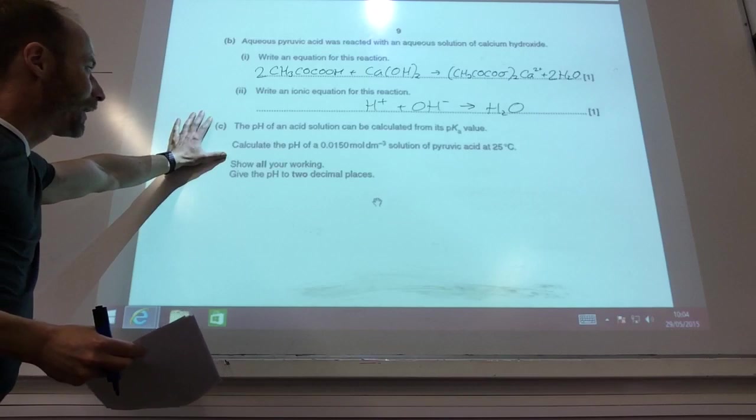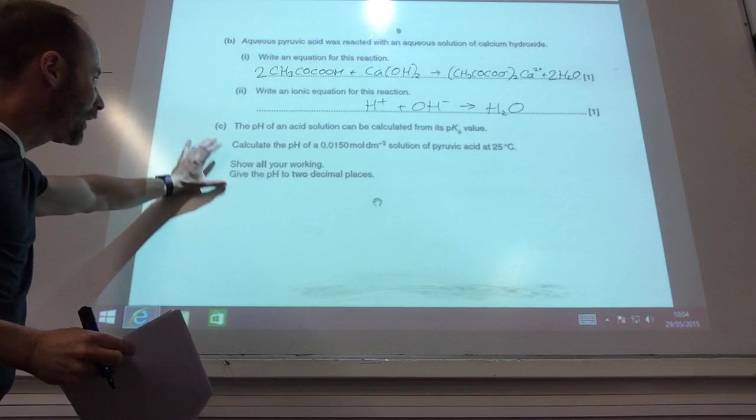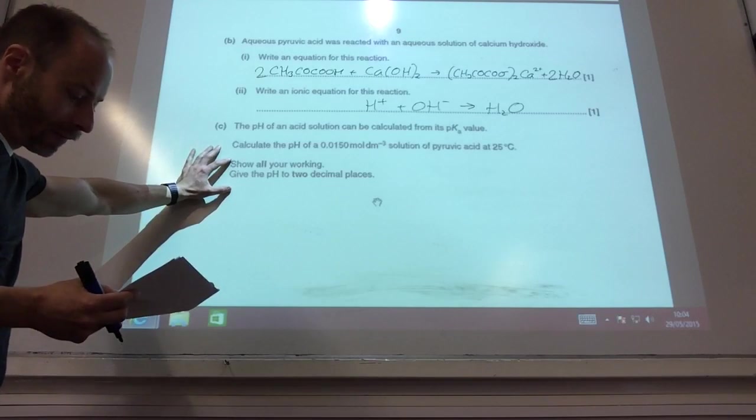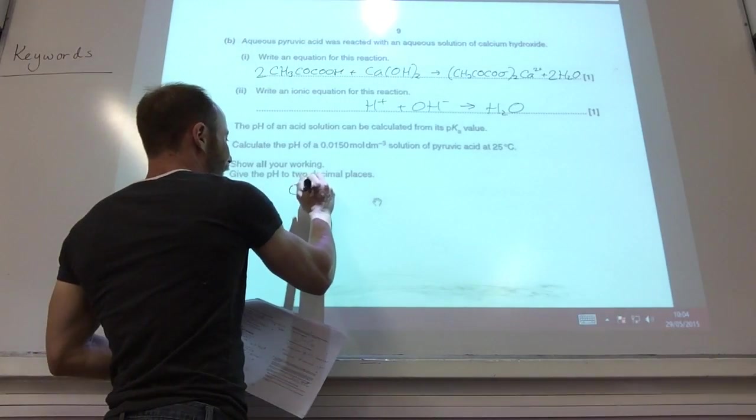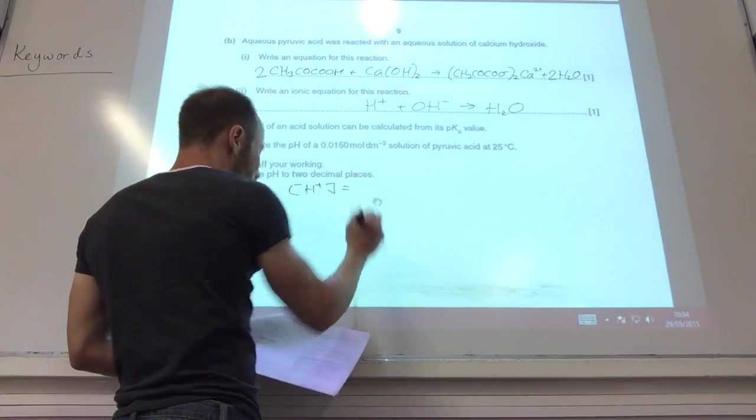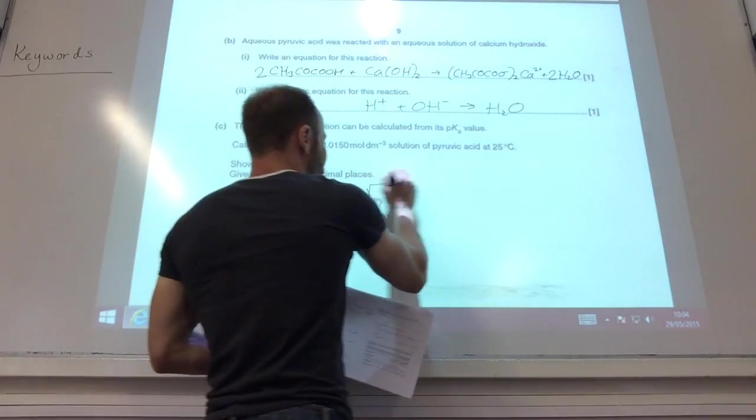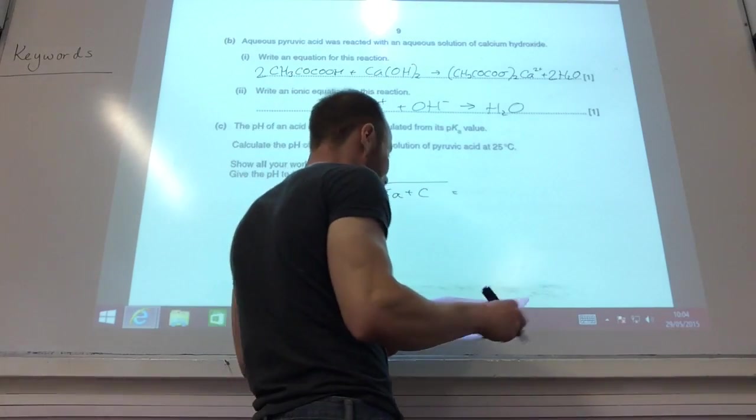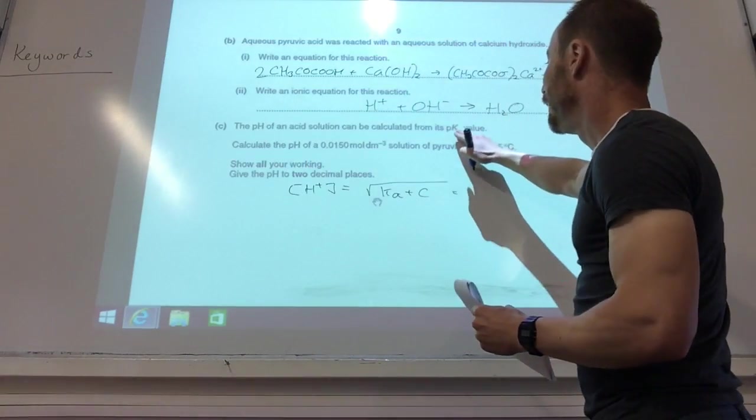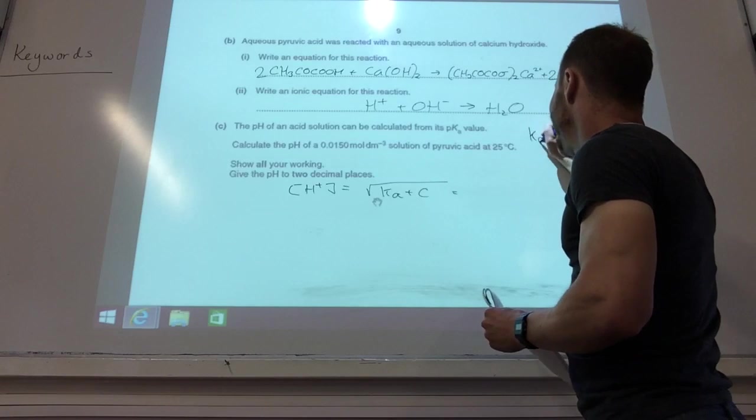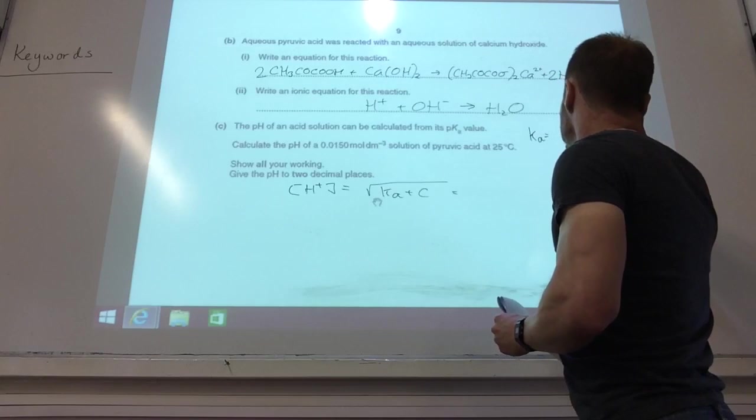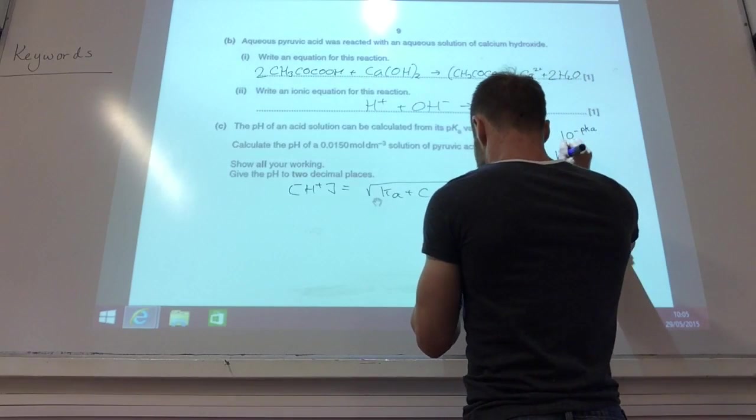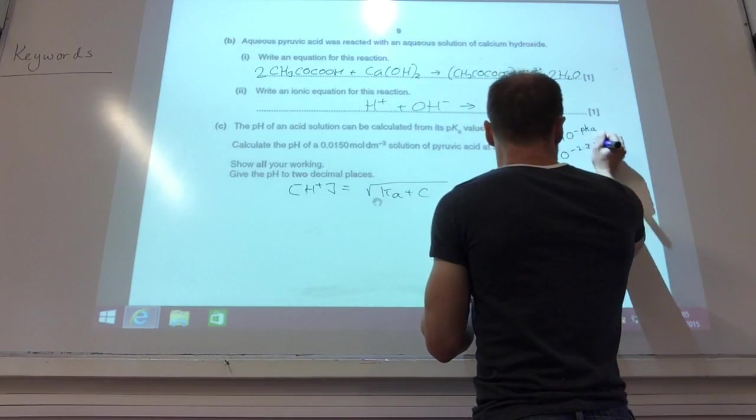The pH of an acid can be calculated from its pKa value. Calculate the pH of that concentration solution. We know that H plus concentration for a weak acid we can find by multiplying Ka with the concentration. Ka we don't know, but Ka is 10 to the minus of the pKa, which in this example is 10 to the minus 2.39, which gives me 4.07 times 10 to the minus 3.